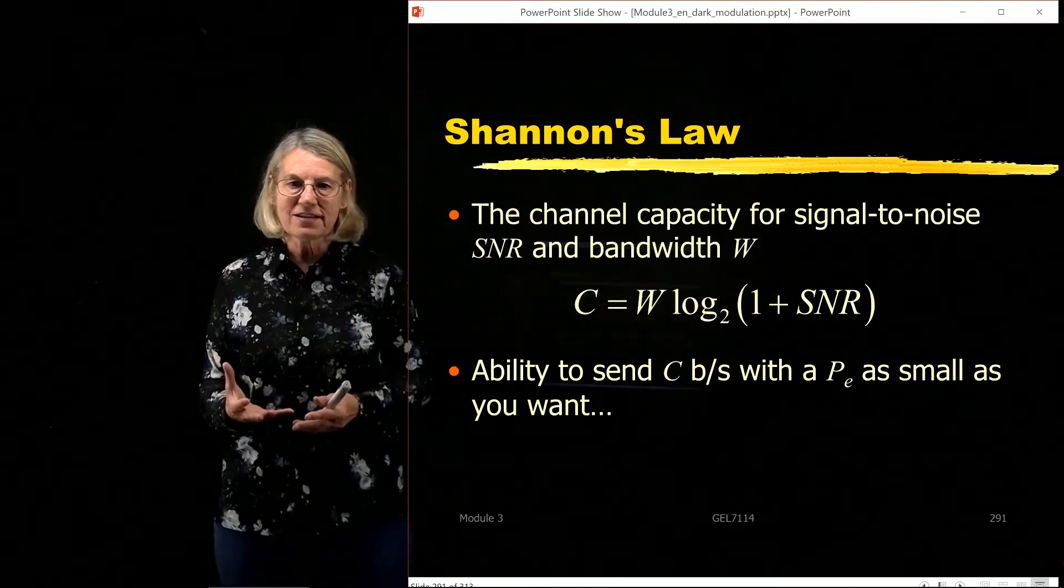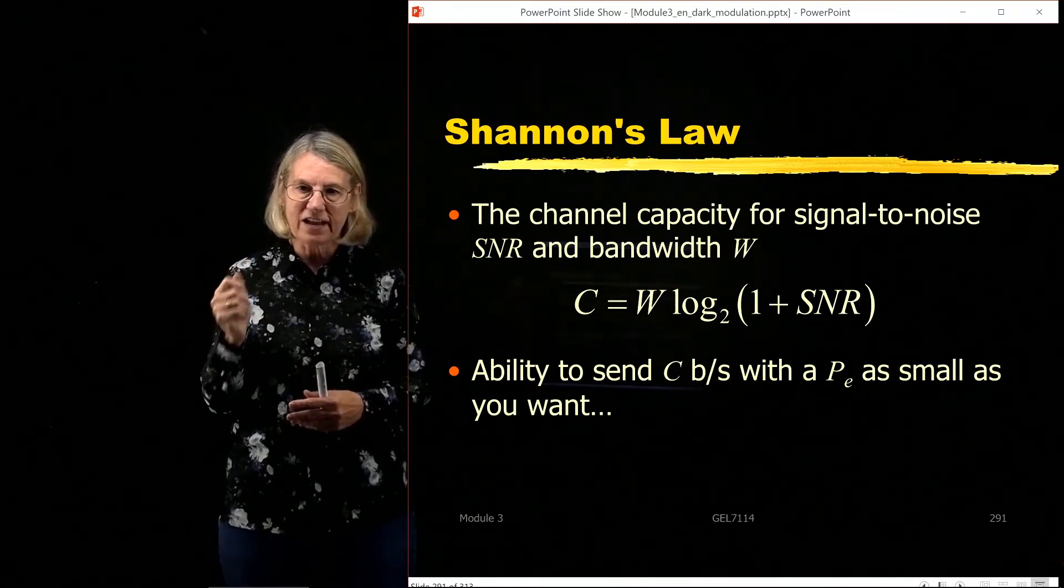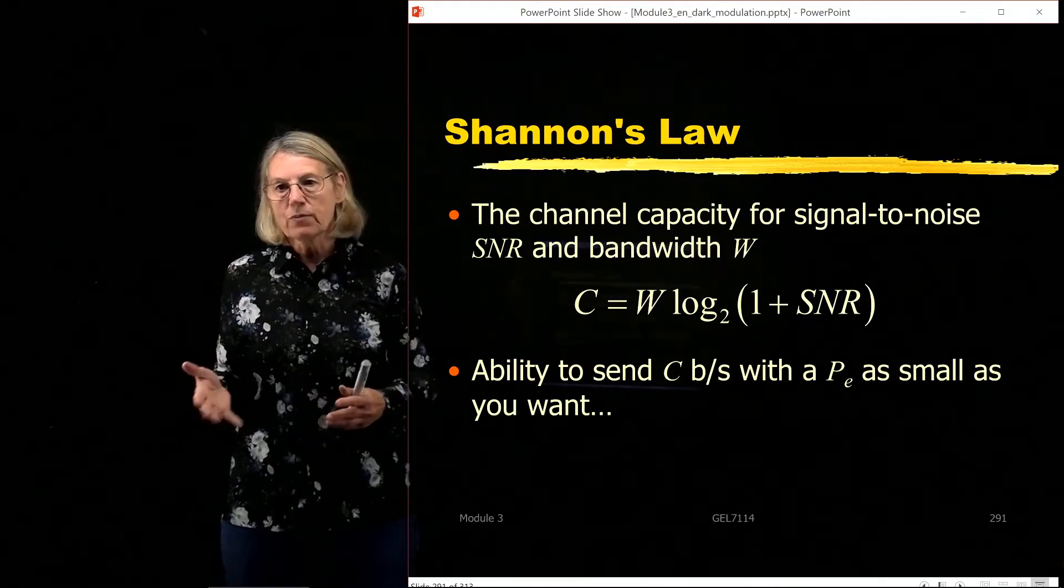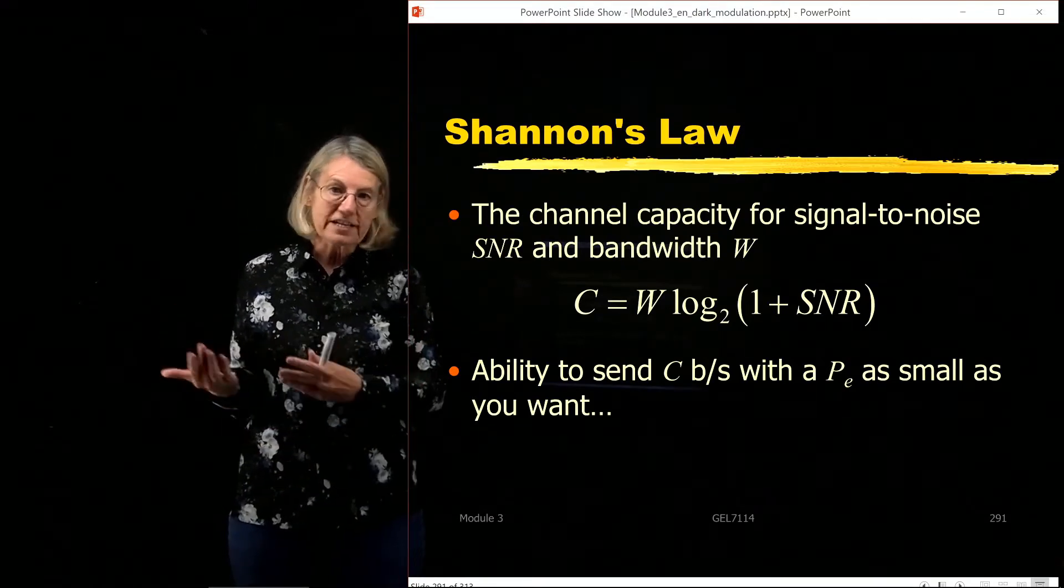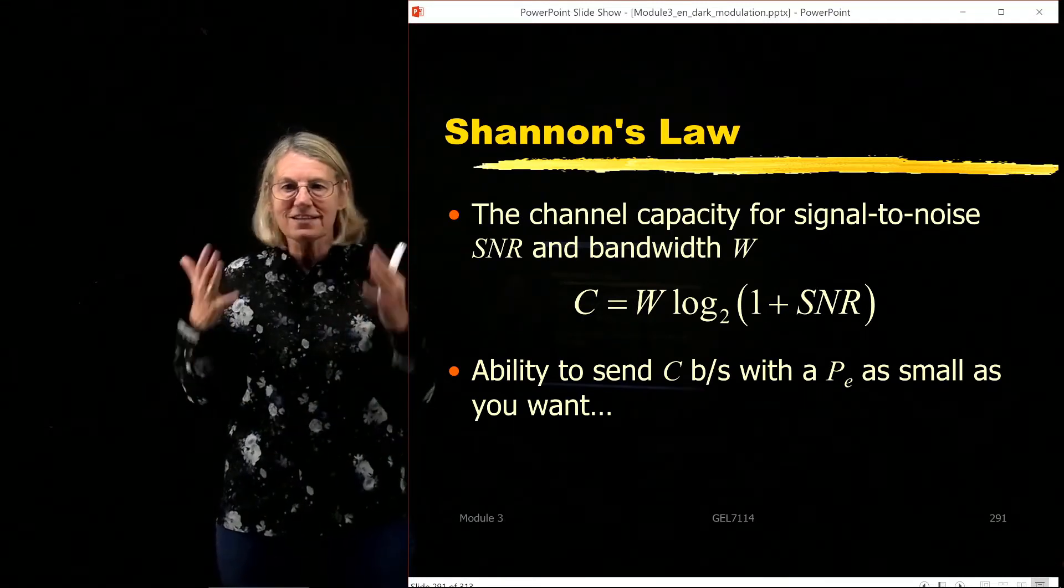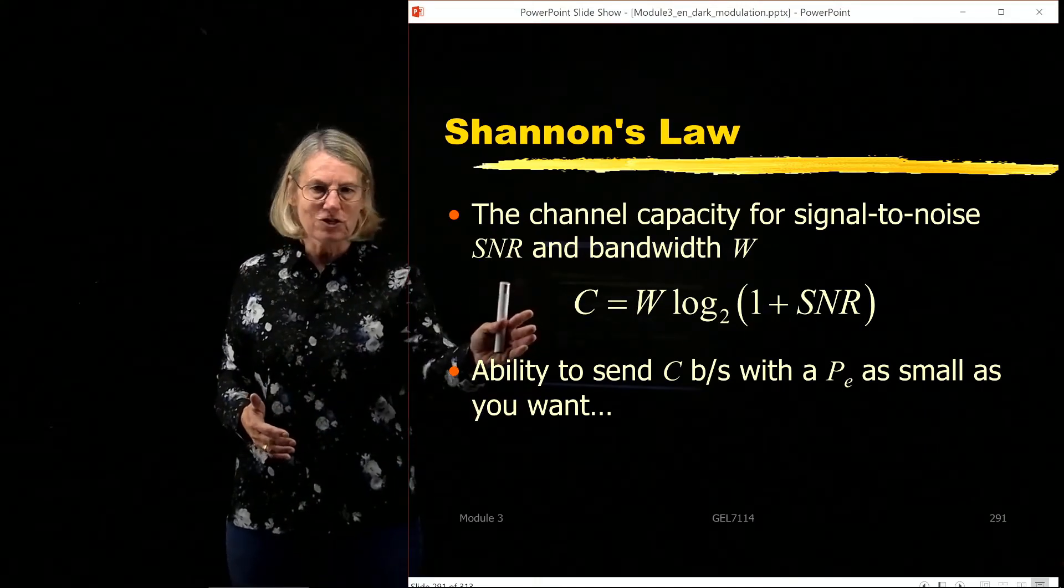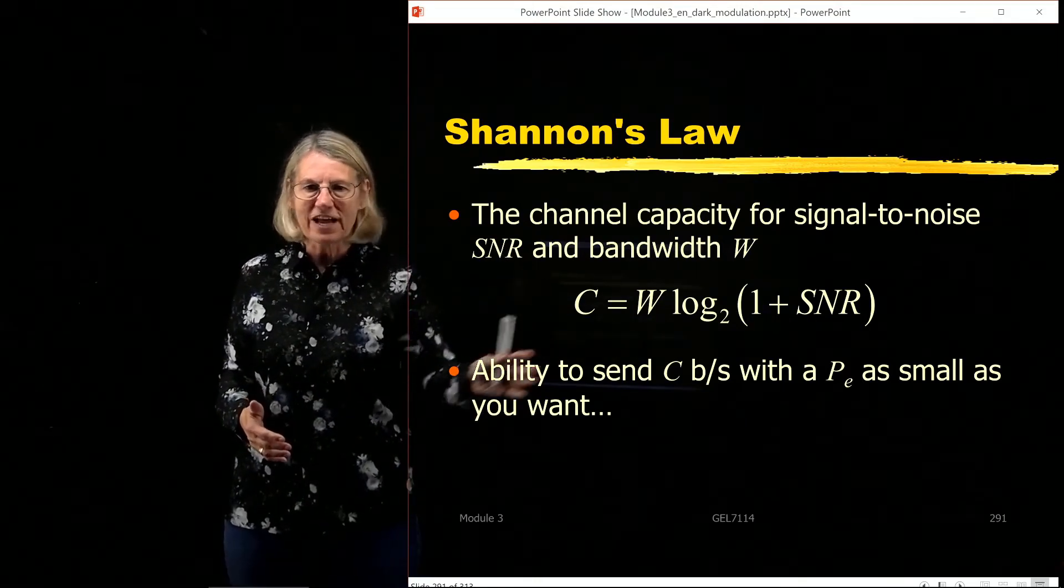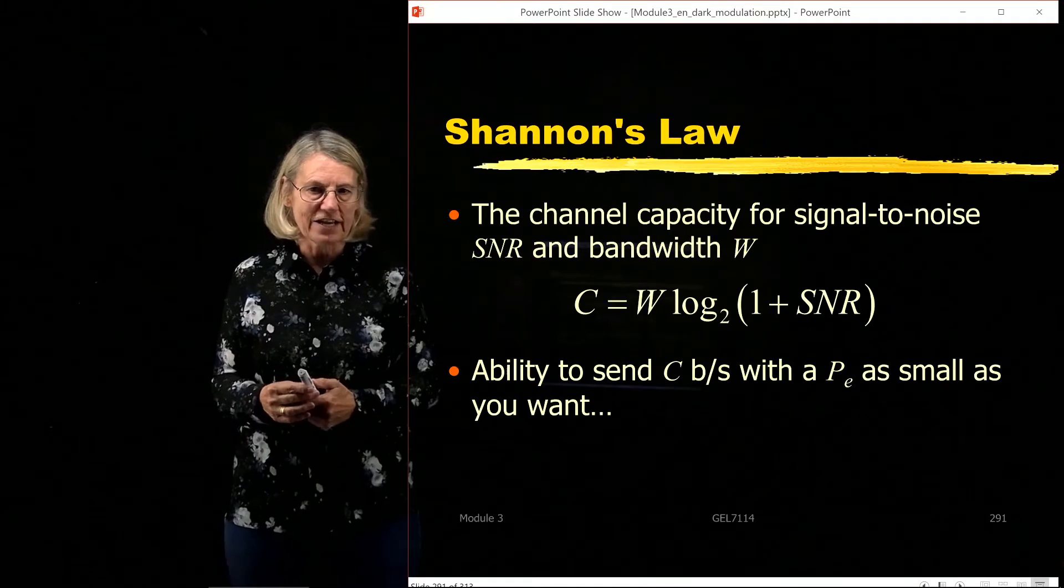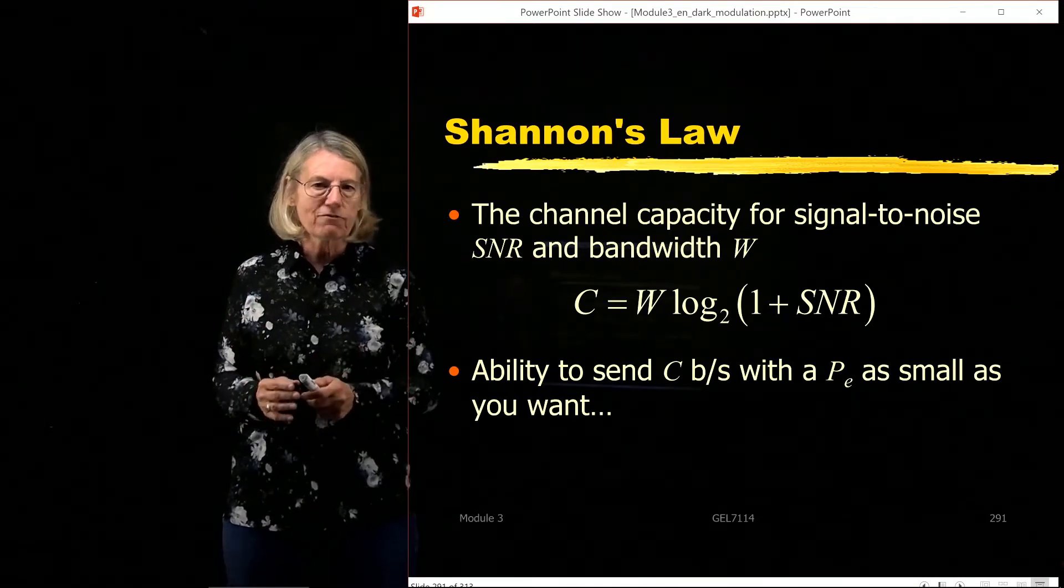So, what is the channel capacity? It's defined as the fastest we can send, the fastest bits per second that we can send, and have a probability of error which is arbitrarily small. Now, how do we get that probability of error we want? We would use complexity to get it down to the level we want, but it says it's possible. You can throw complexity at the problem and get whatever probability of error you want, but if I try to send anything faster than this capacity, bits per second, that won't work. No matter how much complexity you throw at it, it won't work. You will not have reliable communications. So capacity is the largest transmission rate for which you can have reliable communications.